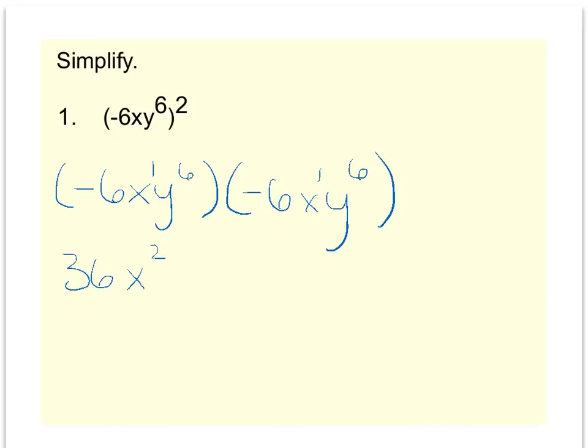y to the sixth times y to the sixth, you'll add those exponents and get y to the twelfth. So you end up with 36x squared y to the twelfth.